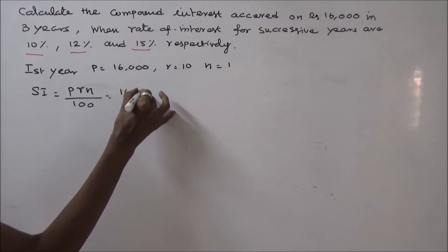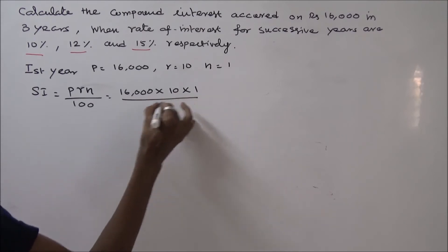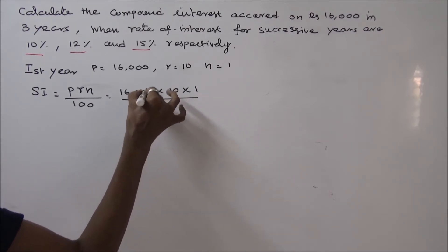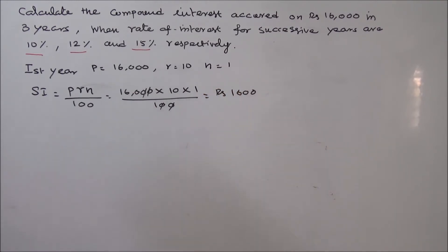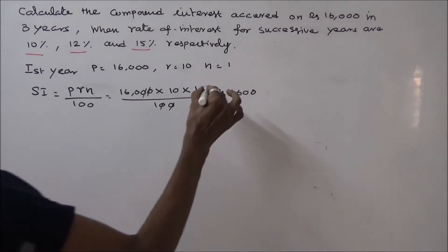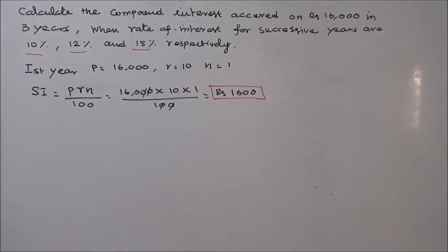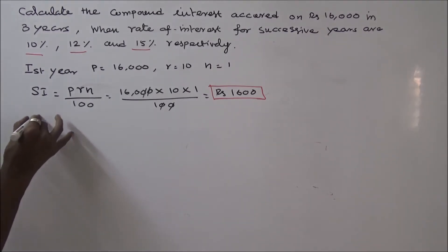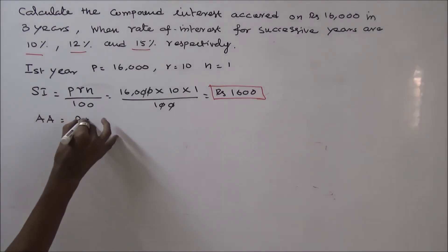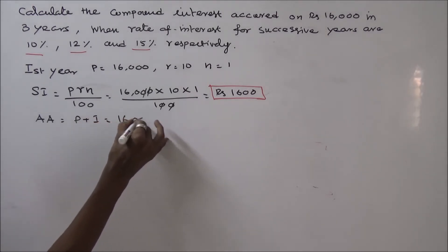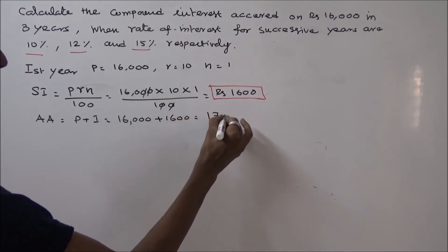So, 16,000 into 10 into 1 divided by 100 — terms cancel — giving Rs. 1,600 as the simple interest. At the end of the first year, the interest received is 1,600. Accrued amount at the end of first year is principal plus interest: 16,000 plus 1,600 equals 17,600.